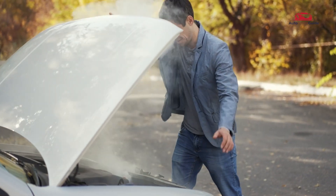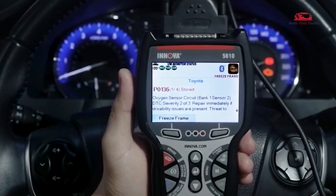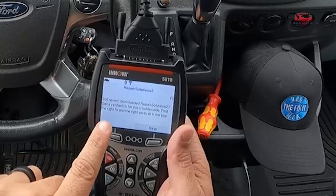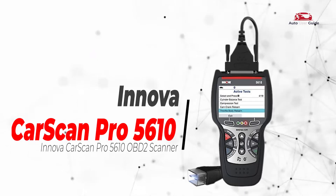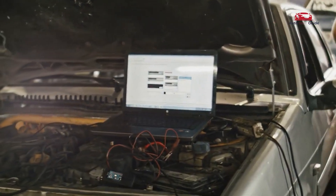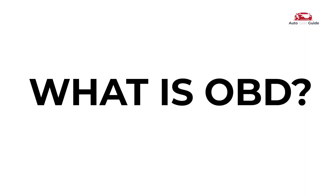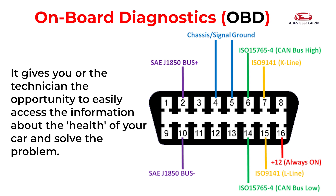Looking to troubleshoot car issues on your own? The Innova CarScan Pro 5610 OBD2 code reader makes it easier to understand and fix engine codes. OBD, or onboard diagnostics, is an automotive electronic system capable of self-diagnosis, indicating and reporting possible problems within the vehicle. It gives you or the technician the opportunity to easily access information about the health of your car and solve the problem.